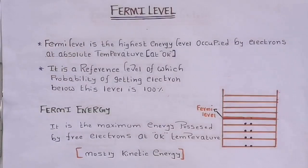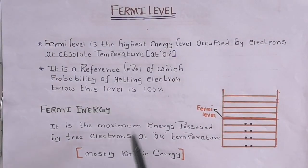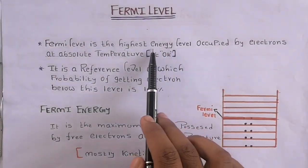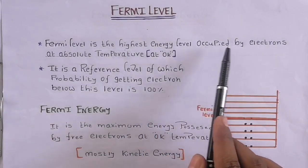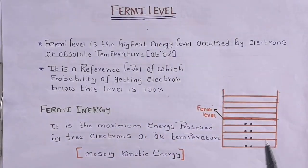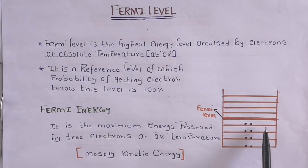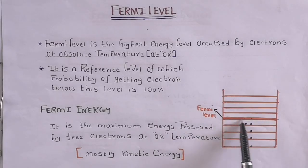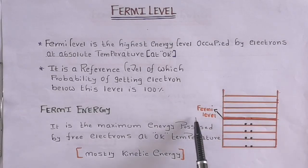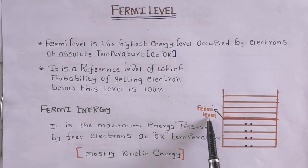Now let's see about Fermi level. As the name indicates, it is an energy level — specifically the highest energy level occupied by electrons. Considering a metal with different energy levels, the electrons fill according to the Pauli exclusion principle, and the highest occupied energy level is called the Fermi level.